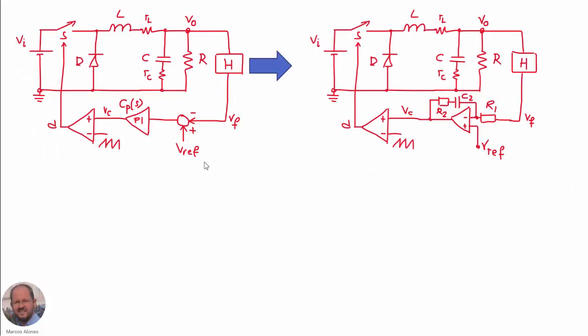Today we are going to investigate the reason for these differences. The key to understanding the difference between the theoretical and simulation results is in the way we are implementing the closed-loop operation of our converter. In this schematic we have the typical implementation: we measure the output voltage with sensor H, compare the voltage with the reference, and send this information into the PI compensator.